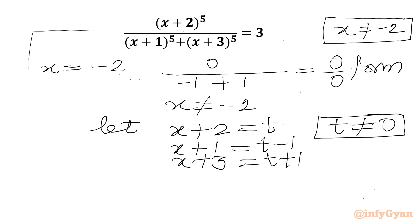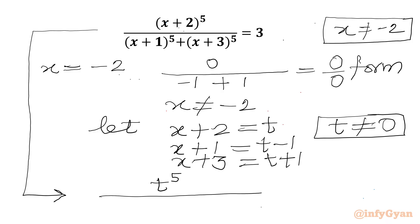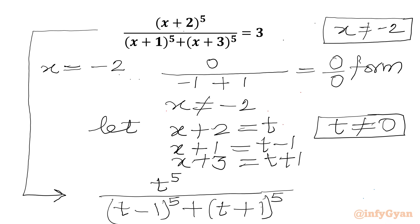Now I can write our equation in terms of t: t^5 / ((t-1)^5 + (t+1)^5) = 3. Now I will use binomial expansion and Pascal's triangle to expand (t-1)^5 and (t+1)^5.